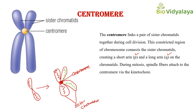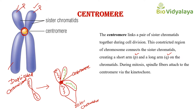Looking at this picture, you can see a duplicated chromosome — meaning two chromatids are present. These sister chromatids are held together at the centromere, which is the constricted region of the chromosome. That constriction creates a short arm called the P arm and a long arm called the Q arm.